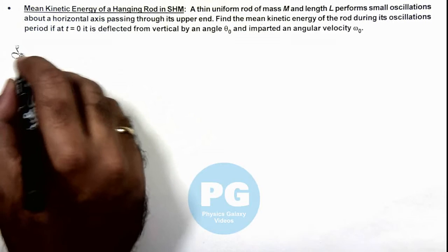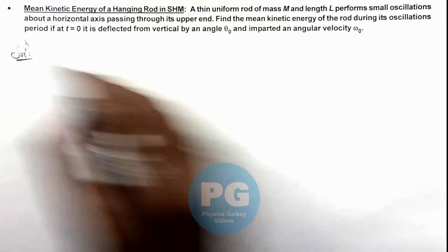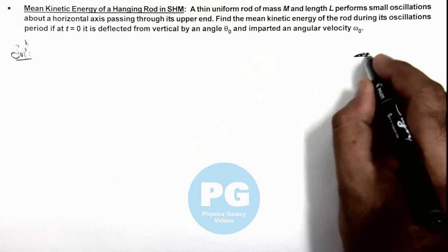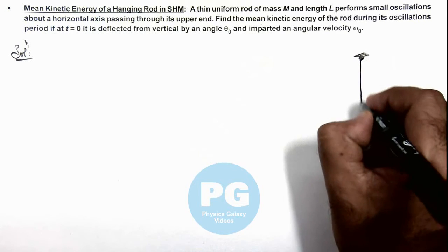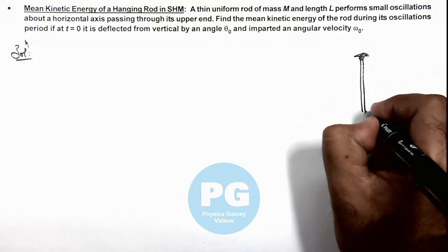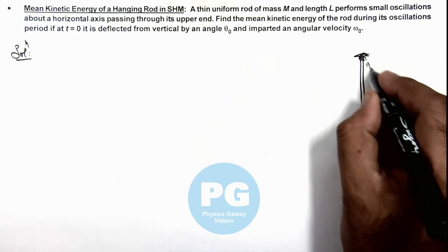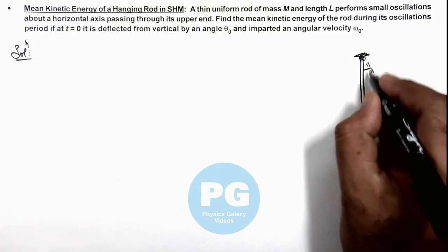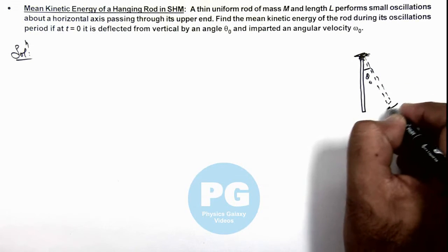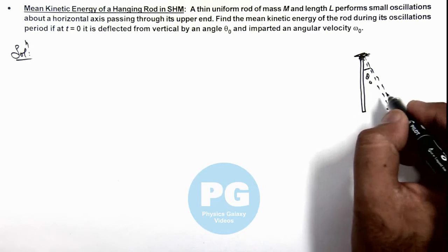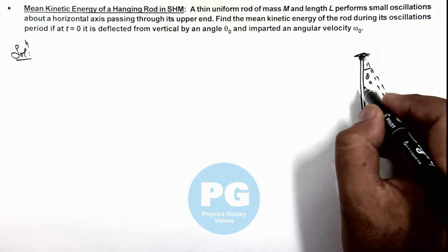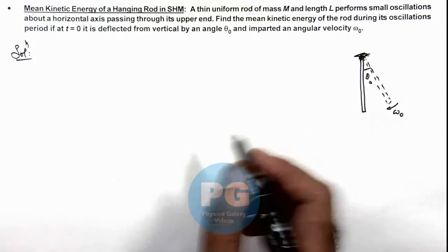This is a case of angular SHM in which the rod is oscillating like a compound pendulum. Here this is the rod given to us. If it is deflected from vertical by an angle theta not and imparted an angular speed omega not, that means its angular amplitude is more than theta not. So we can easily calculate it.